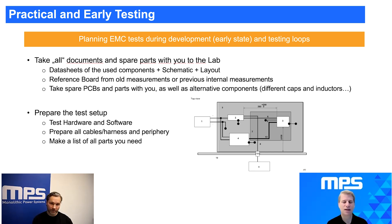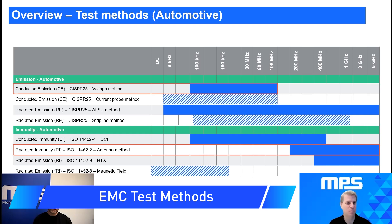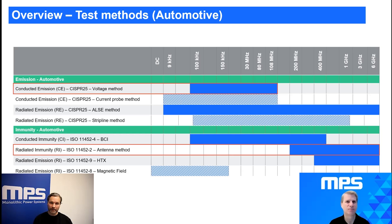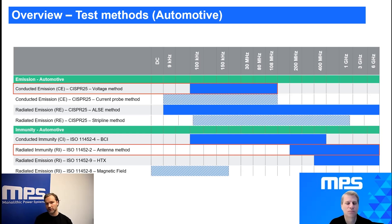We have a standard test list that's also on the website. We are prepared for basic testing methods for automotive, industrial, and consumer testing. For emission testing we start at nine kilohertz and go up to six gigahertz, and for immunity testing we start at around 100 kilohertz and also go up to six gigahertz, to have the full range capability.